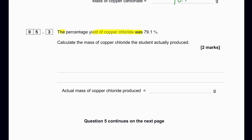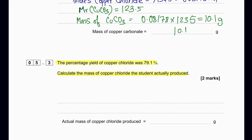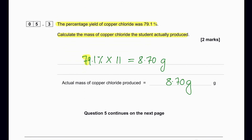The percentage yield of copper chloride was 79.1%. Calculate the mass of copper chloride the student actually produced. To find the actual mass, we take 79.1% and multiply it by 11 grams: 0.791 × 11 = 8.70 grams. So the actual mass the student produced was 8.70 grams.